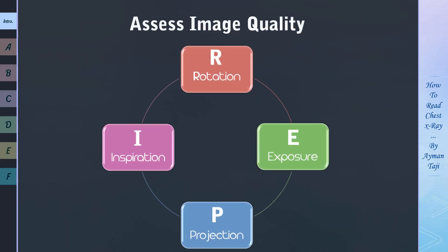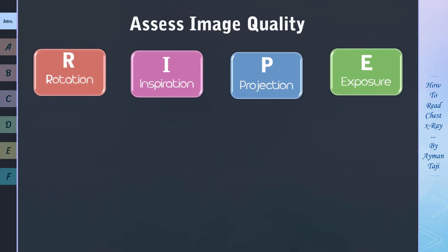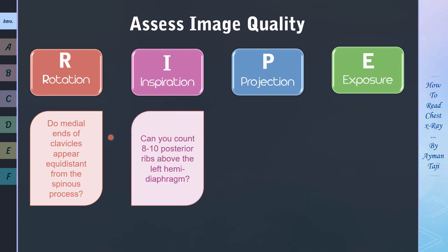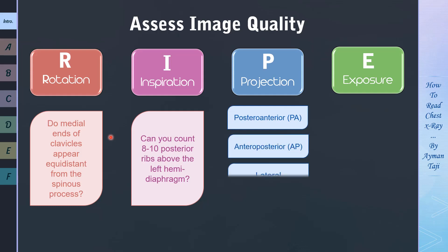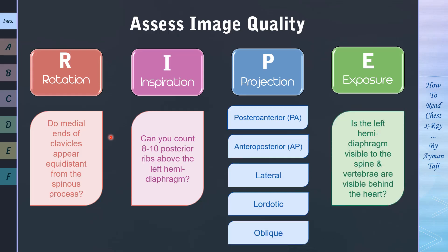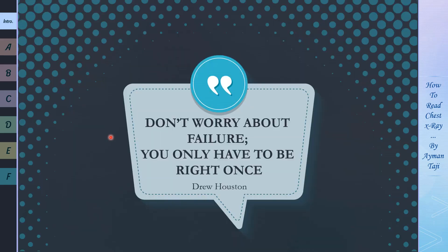So this is how to assess the CXR quality. Let's sum up what we've said. First, is the patient rotated? Do medial ends of clavicles appear equidistant from the spinous process? Then for inspiration, can you count 8-10 ribs above the left hemidiaphragm? Then for projection, is the image PA, which is the most common one? Or AP? Lateral? Lordotic? Or oblique? And finally, for the exposure, is the left hemidiaphragm visible to the spine, and vertebrae are visible behind the heart? In the next lecture, we'll have a quick anatomical review of which organs we'll see in a CXR.